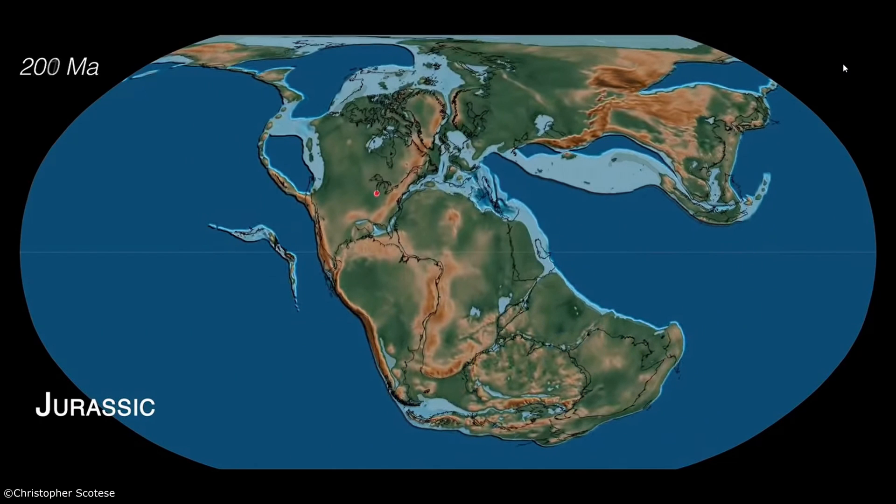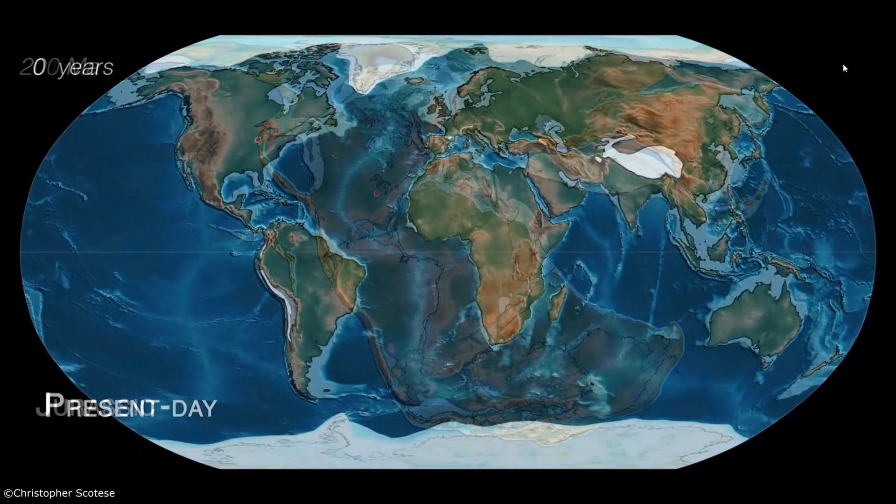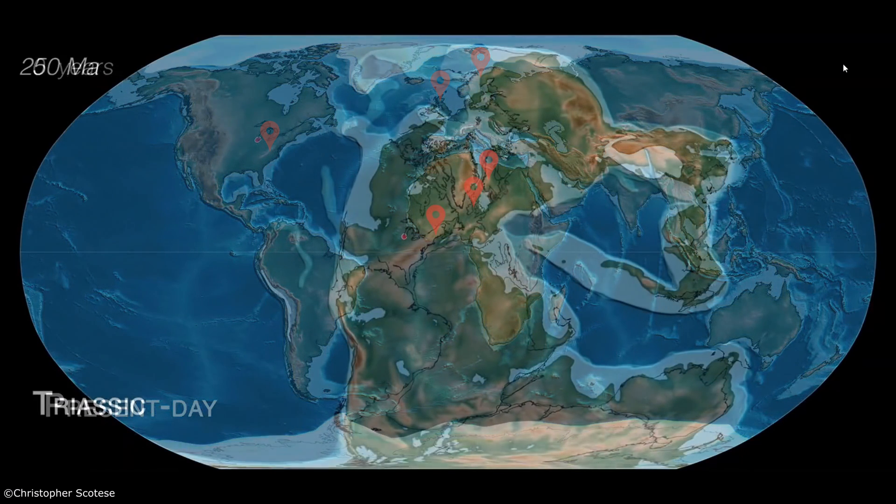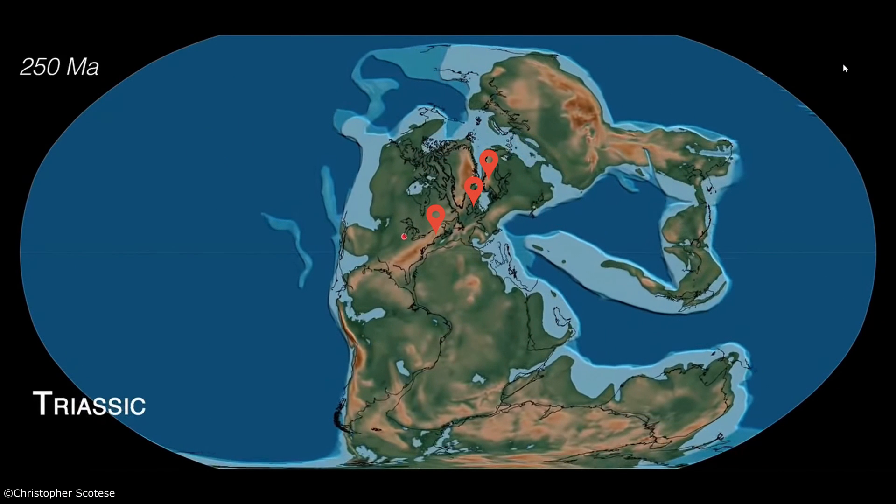Some great evidence he found was between North America and Europe. He discovered that the Appalachian Mountains, mountains in the north of the British Isles, and the Scandinavian Mountains had rocks with similar age and characteristics. This could be explained if, in the past, they were once united as a part of a single large mountain range that connected them, only to separate and move to other parts of the world.